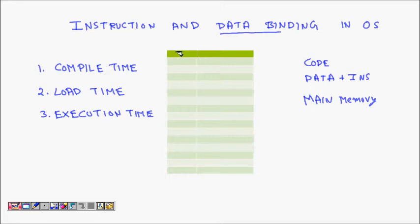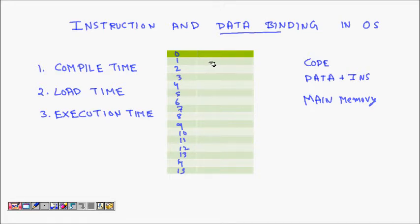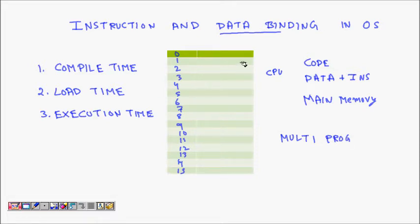Consider a memory with locations 0 through 15 — a small memory of 16 locations. Whatever code we put needs to be in this main memory so that the CPU can execute it. Today we have multi-programming computers, where multiple programs run in parallel, meaning they all need to be in the main memory at the same time.